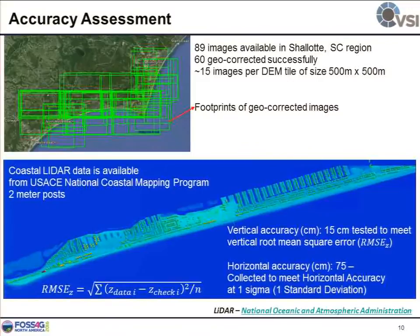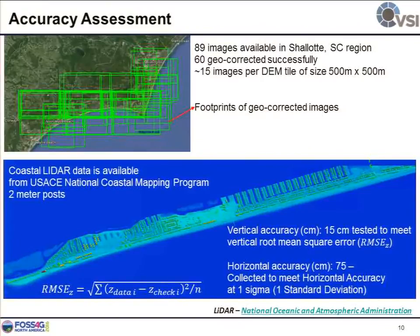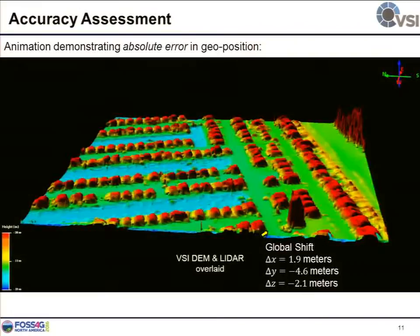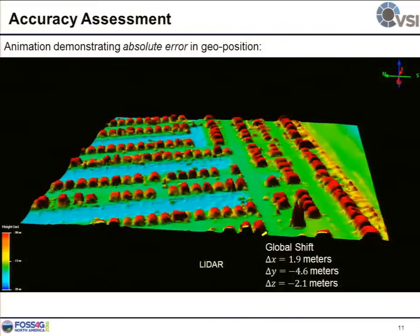We picked a site where coastal LiDAR is available — along the coastline of South Carolina, where we have LiDAR from the NOAA website, which is publicly available. This LiDAR has 75-centimeter horizontal accuracy and 15-centimeter vertical accuracy. In this region, we had roughly 90 images available, and we successfully geo-corrected 60 of them — meaning on average, each 500-meter-by-500-meter tile along the coastline has roughly 15 images.